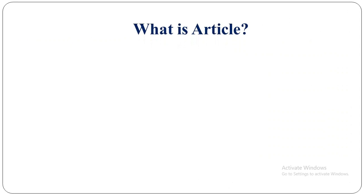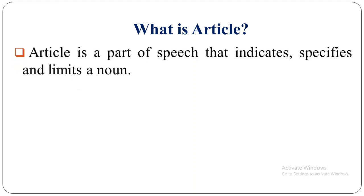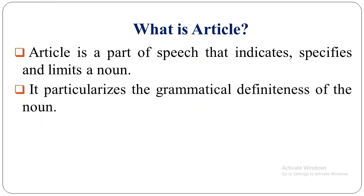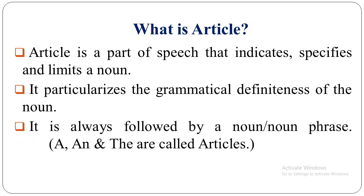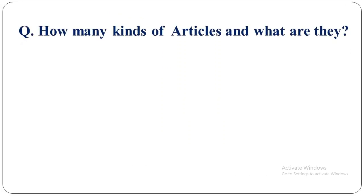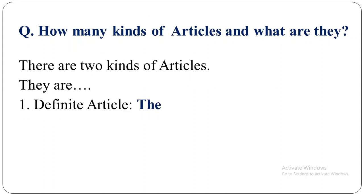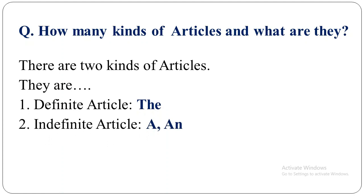What is an article? An article is a part of speech and it is an adjective. Article is a part of speech that indicates and limits a noun. It particularizes the grammatical definiteness of the noun, and it is always followed by a noun or noun phrase. A, an, and the are called articles. There are two kinds of articles: definite article, which is only 'the', and indefinite article, which includes A and AN. So there are three articles in total: the, a, and an. The is definite article; a and an are indefinite articles.